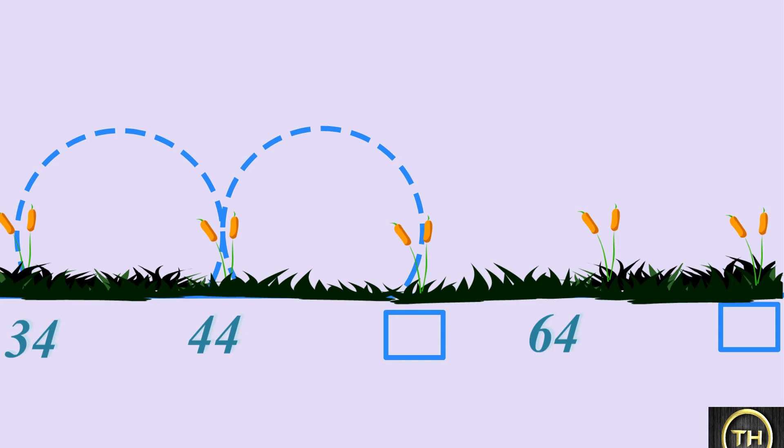Each distance will be 44 minus 34, that is 10 units, and 64 minus 54, which is also 10 units. So here, the interval is 10.